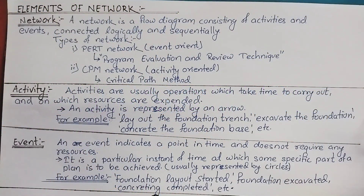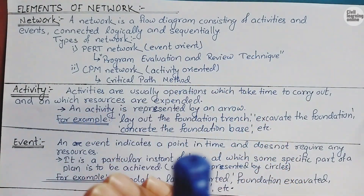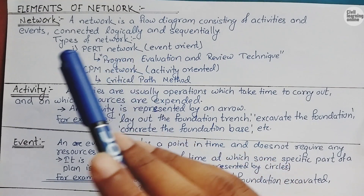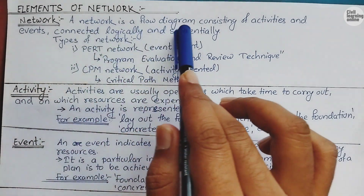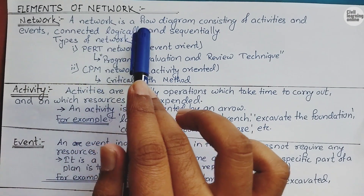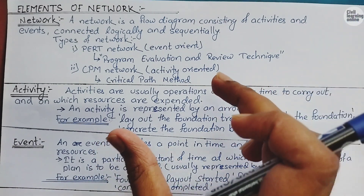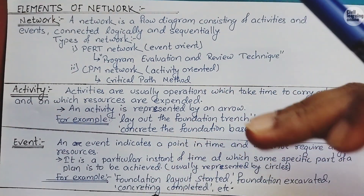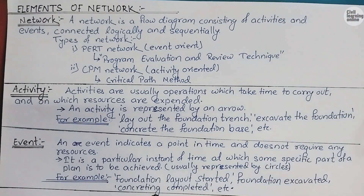Let's begin our lectures on project management. In order to study this subject, one must have knowledge about network, activity, and event — what these are, their types, and different types of networks. We will study about each of them accordingly. The definition of network says that a network is a flow diagram consisting of activities and events connected logically and sequentially. We have to follow them in order; we cannot perform the second activity first and the first activity last.